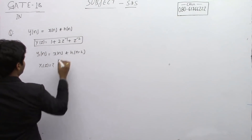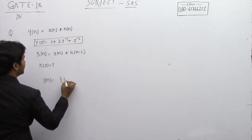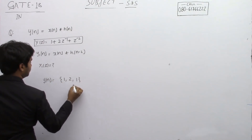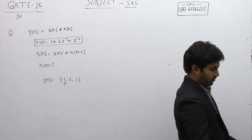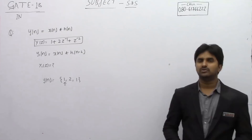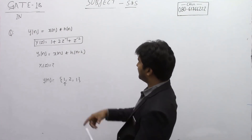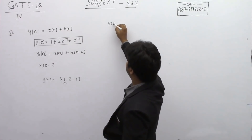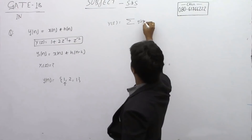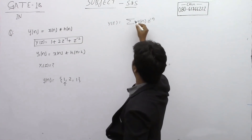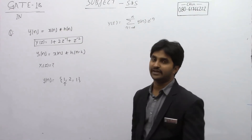If you observe, you can write y(n) as {1, 2, 1}. This is because if you compare Y(z) with the definition: Y(z) equals the summation of y(n) into z power minus n, with n ranging from minus infinity to infinity.